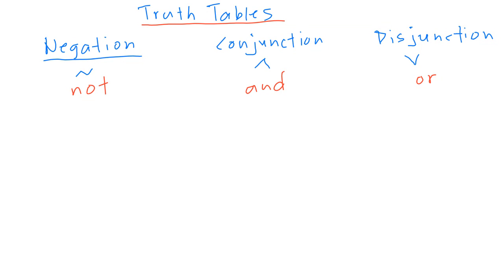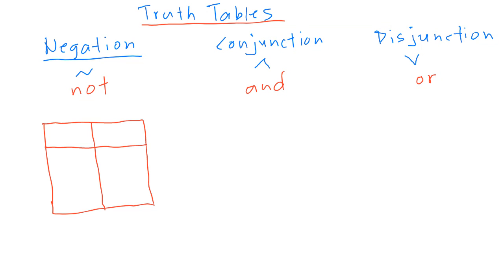For negation, we have a two-row table. If you're given p as the symbolic logic, the outcome column would be not p. There are only two conditions: true and false. So if p is true, then not p means you take the complement or the opposite of true, which would be false.